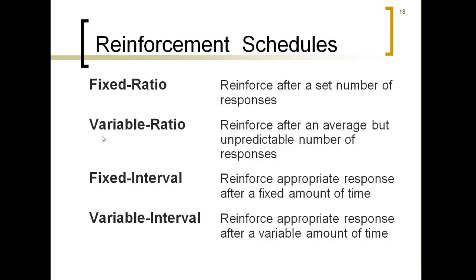A classic example of variable ratio is gambling. At a casino slot machine, you don't know how many times you'll put in a coin before winning — which is partly why gambling is addictive. You keep thinking it could be one more. Thrift store shopping is similar: some days there's nothing you want, but you keep going because today could be the day you find exactly what you're looking for. That's variable ratio.